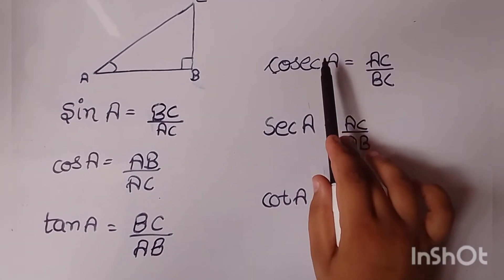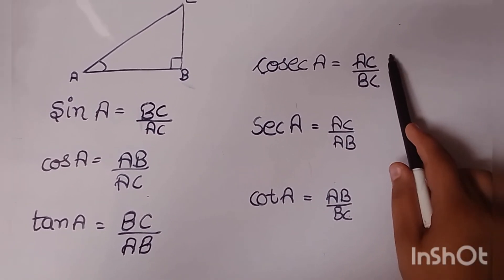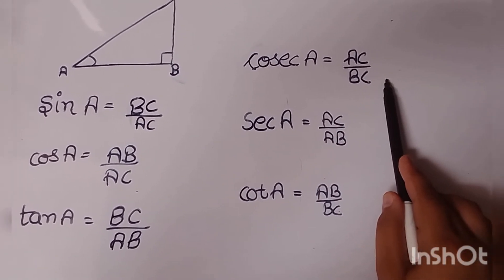Cosecant is the inverse of sine, that is 1 by sine. AC upon BC equals 1 by sine.